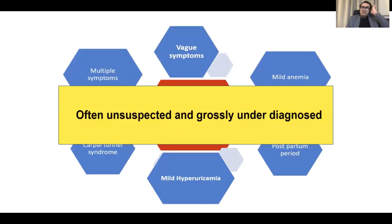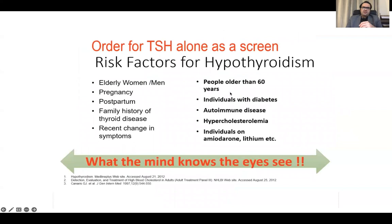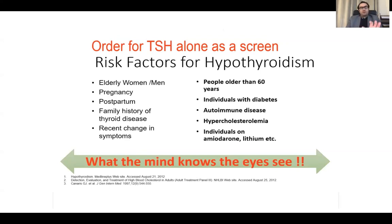Hypothyroidism is often unsuspected and grossly underdiagnosed. You should also suspect hypothyroidism in someone having menstrual issues, galactorrhea, premature ovarian insufficiency, infertility, pubertal issues, or height issues. In all these, we should do the screening test TSH. Especially in elderly women, men, pregnancy, postpartum, family history of thyroid disease, recent changes in symptoms, diabetes, other autoimmune disease, dyslipidemia, or patients on drugs like amiodarone or lithium — always check TSH.